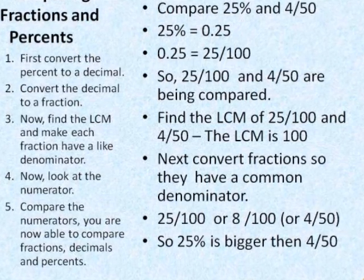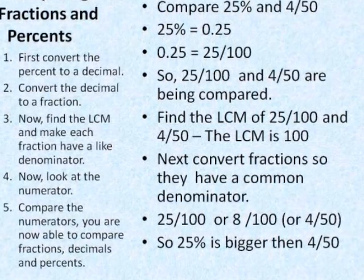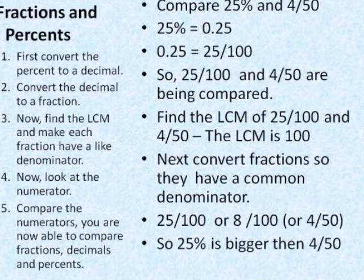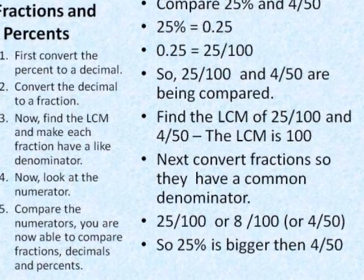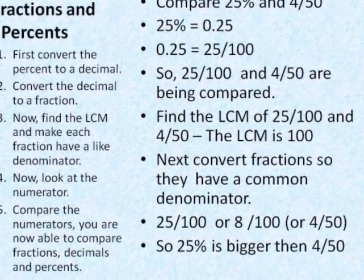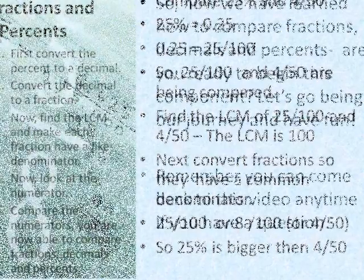In our example, 25% and 4 fiftieths, we know that 25% is 25 over 100 and 4 fiftieths is 8 over 100. So we know 25% is bigger.